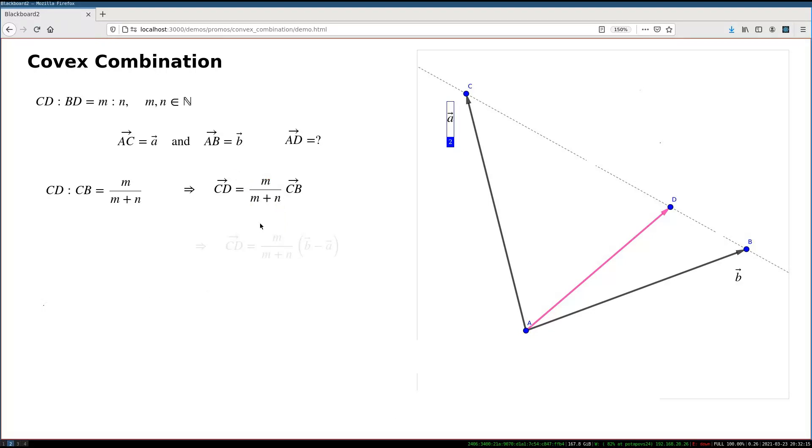And now we can use vector algebra to find the vector AD, because I can do the following manipulation. So, I can say CB vector, CB vector, it's this long one. It's a difference of two vectors AB and AC, or in my little symbol terms, it's B take A. Now, I plan to replace this expression in this place.